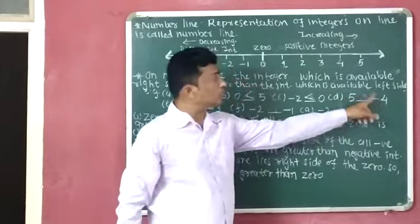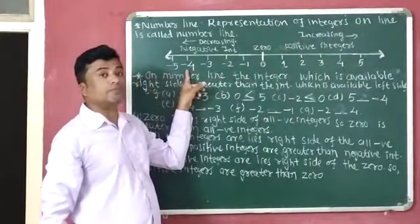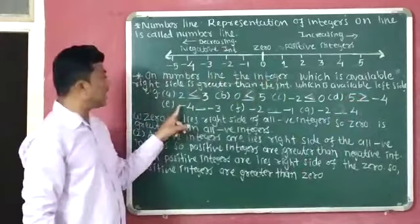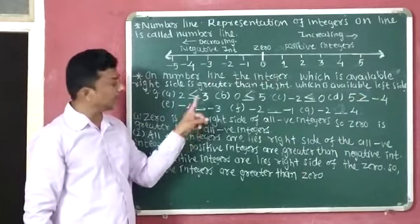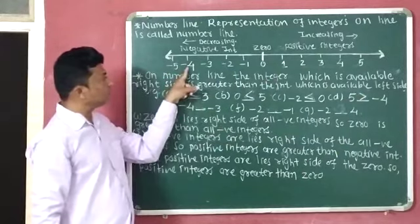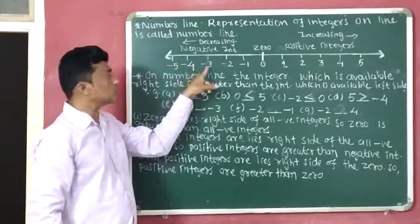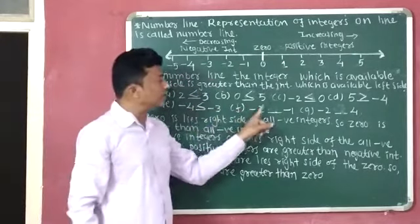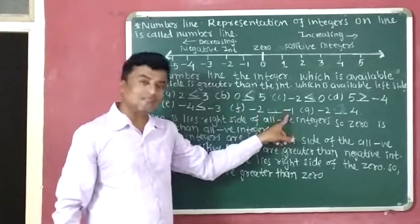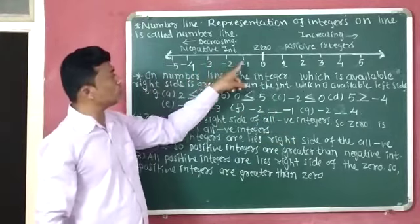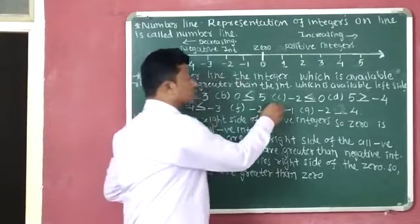Five and minus four — five is available on the right side of minus four, so five is greater. Minus four and minus three — you might first think minus four is greater, but minus three is greater because minus three is available on the right side of minus four. Minus two and minus one — minus one is available on the right side of minus two, so minus one is greater.